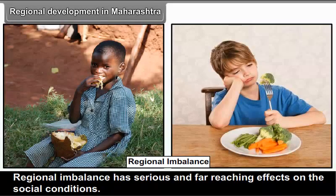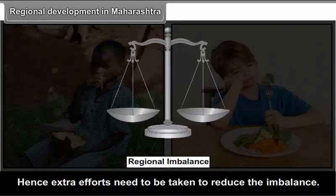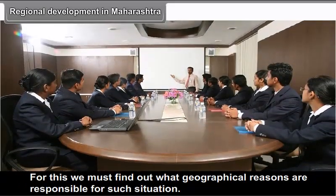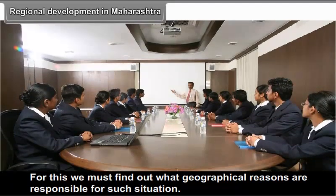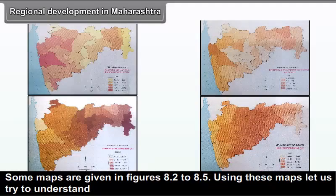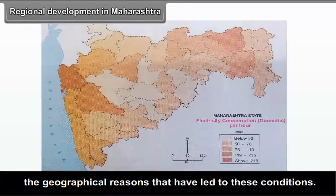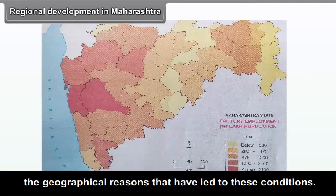The wide difference in HDI values points towards regional imbalance, indicating that development in the state is not all-inclusive. Regional imbalance has serious and far-reaching effects on social conditions. Extra efforts need to be taken to reduce this imbalance. For this, we must identify what geographical reasons are responsible for such situations, using maps in Figures 8.2 to 8.5.